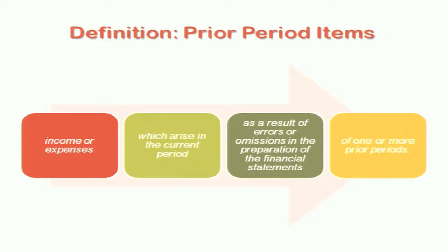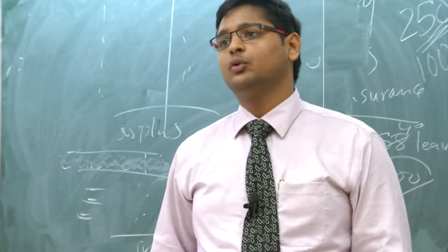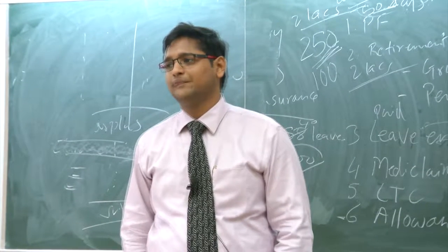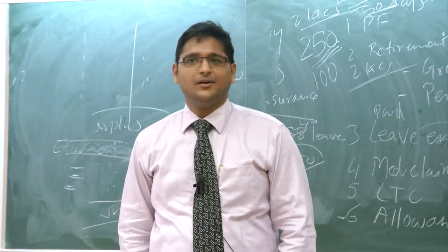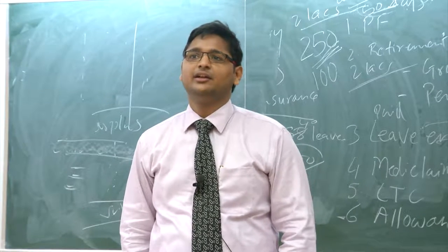Then there is something called prior period items. How do you currently classify prior period items? Do you show them separately or mix them in with normal expenses? A separate column for prior period items — that is what you have to do, and that is how this standard says you have to do it. Prior period items are income or expenses which arise in the current period as a result of errors or omissions in preparation of financial statements of one or more prior periods. Prior period items only relate to the income and expenditure account.